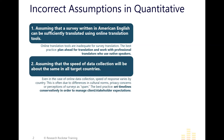The second newbie mistake is assuming that the speed of data collection will be about the same in all target markets. When you're working up a project schedule to set expectations with stakeholders, colleagues, or clients, there's a temptation to want to show that the schedule is going to be awesome and fast. But in reality, you have to build in the assumption that even with online data collection, the speed of response will vary by country.